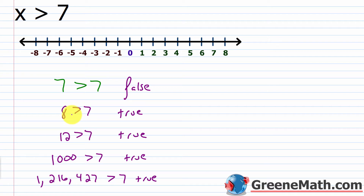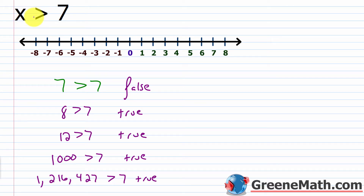So how do we notate this graphically? On the number line we locate 7 and mark it as a boundary point separating the solution from the non-solution region. We use either a parenthesis or an open dot at 7. The parenthesis faces towards the solution region — since x is greater than 7, the solution is to the right, so the parenthesis faces right and touches 7. Then we shade the number line to the right of 7, including the arrow to indicate it continues forever. Any number larger than 7 satisfies this inequality.